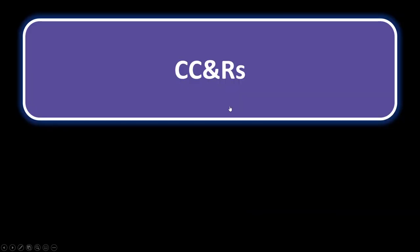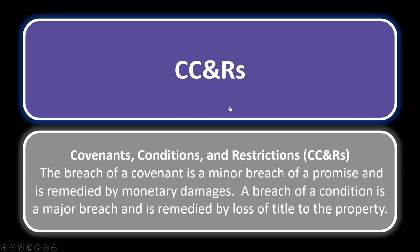CC&Rs — covenants, conditions, and restrictions. This is an encumbrance based on use, so it limits title. When you breach a covenant, it's a minor breach of a promise, remedied by monetary damages — usually just a fine. Whereas if you breach a condition, it's a major breach, very serious, and is remedied by loss of title to the property. For example, if CC&Rs specify approved exterior paint colors and you paint your house purple, you could breach the condition and lose title to the property.